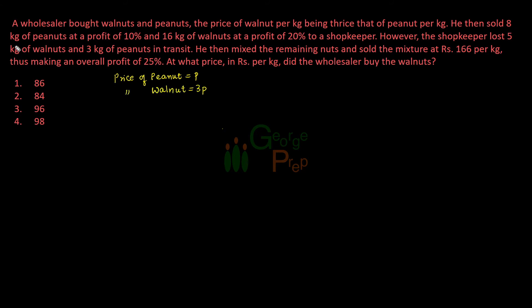He then sold 8 kg of peanuts at a profit of 10% and 16 kg of walnuts at a profit of 20% to a shopkeeper. So whatever is the selling price for wholesaler will be the cost price for shopkeeper. He has sold 16 kg of walnuts and 8 kg of peanuts at a profit of 10%. So if we want to find out cost price for shopkeeper, which is also the selling price for wholesaler.